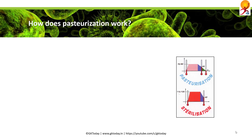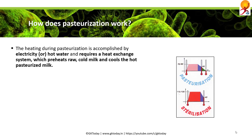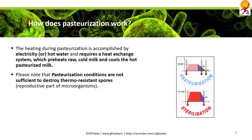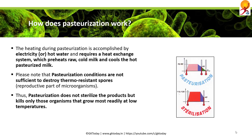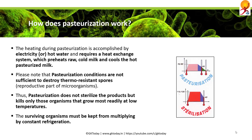How does pasteurization work? The heating during pasteurization is accomplished by electricity or hot water and requires a heat exchange system which preheats the raw cold product and cools it later. Pasteurization conditions are not sufficient to destroy thermoresistant spores. Pasteurization does not sterilize the product but only kills organisms that grow most readily at low temperatures, and surviving organisms must be kept from multiplying by constant refrigeration.